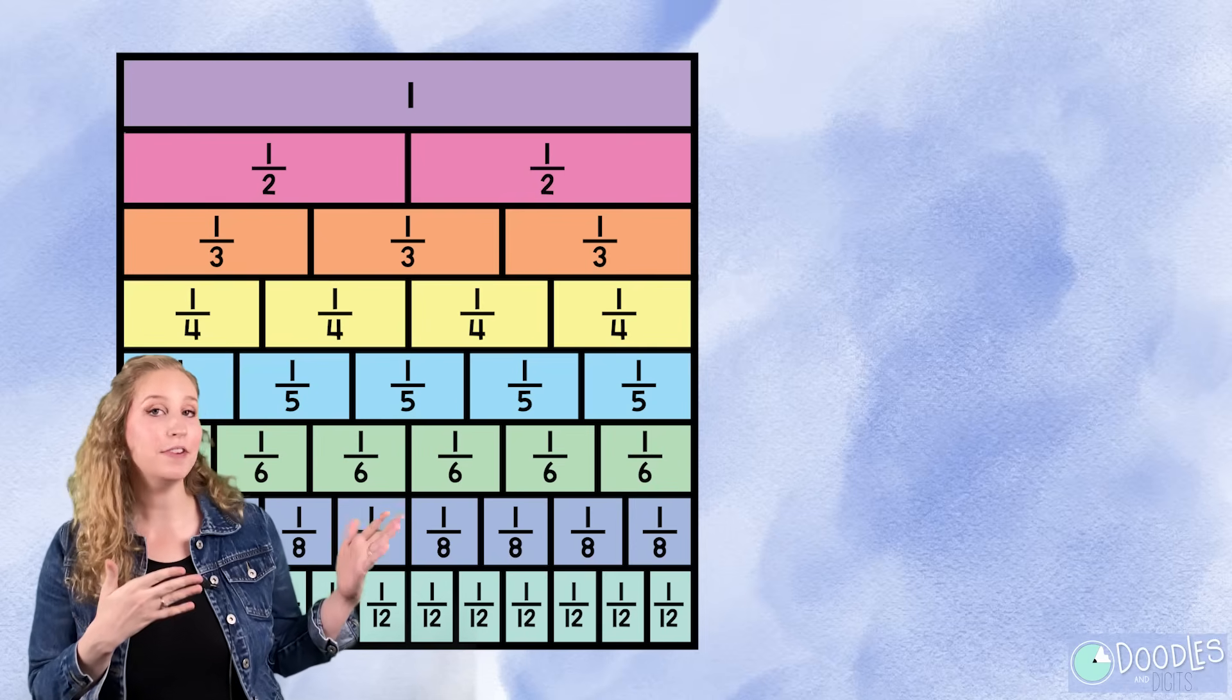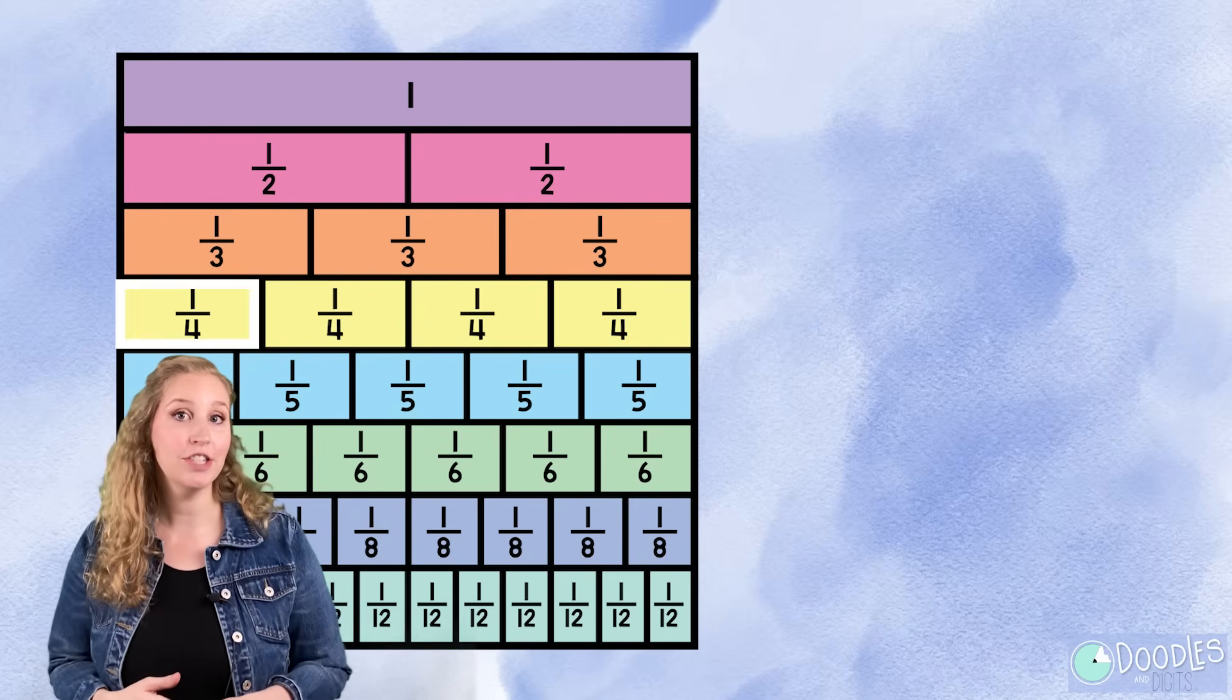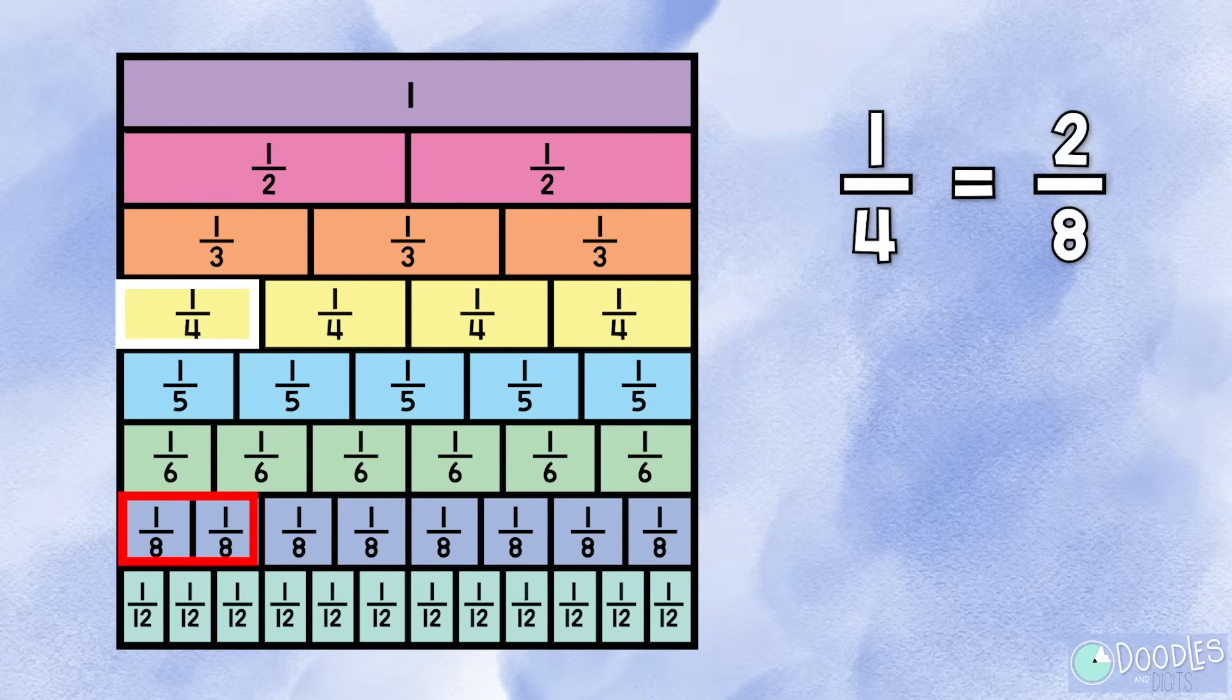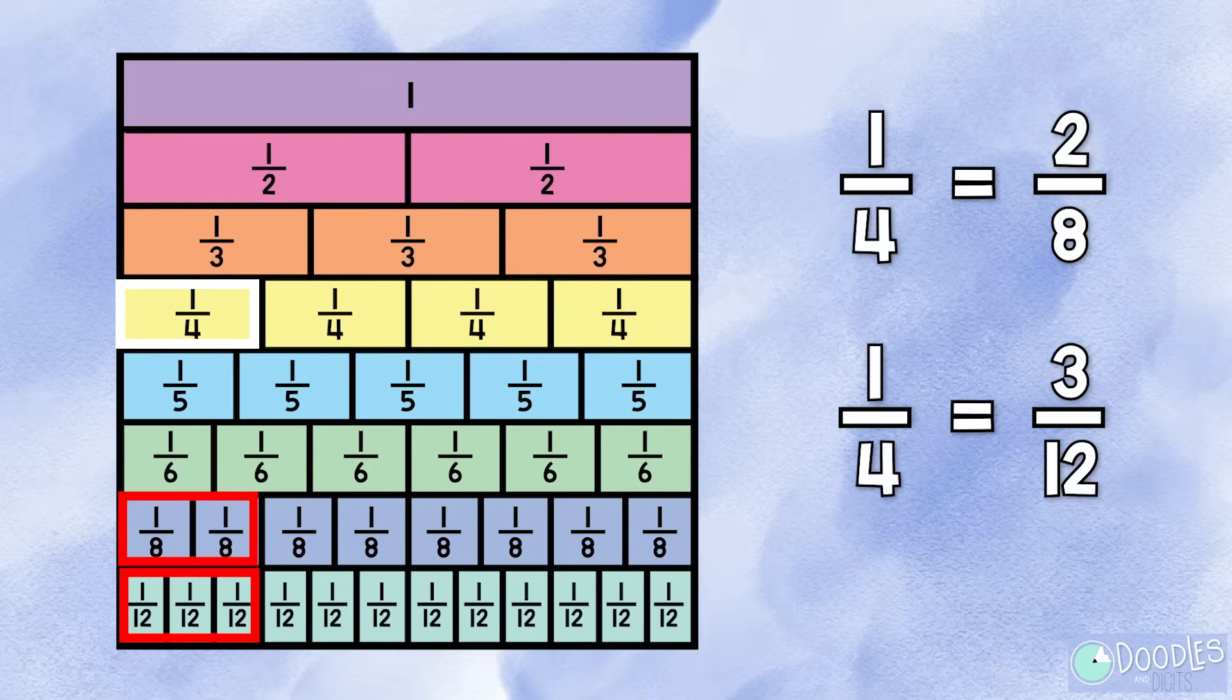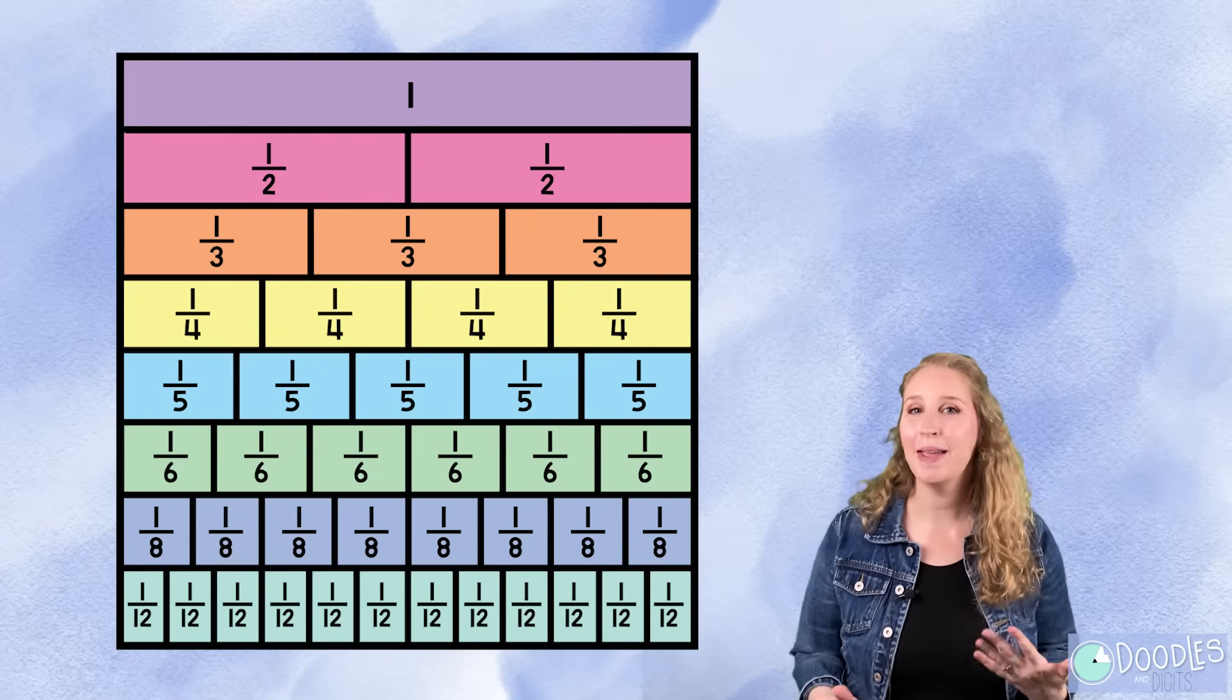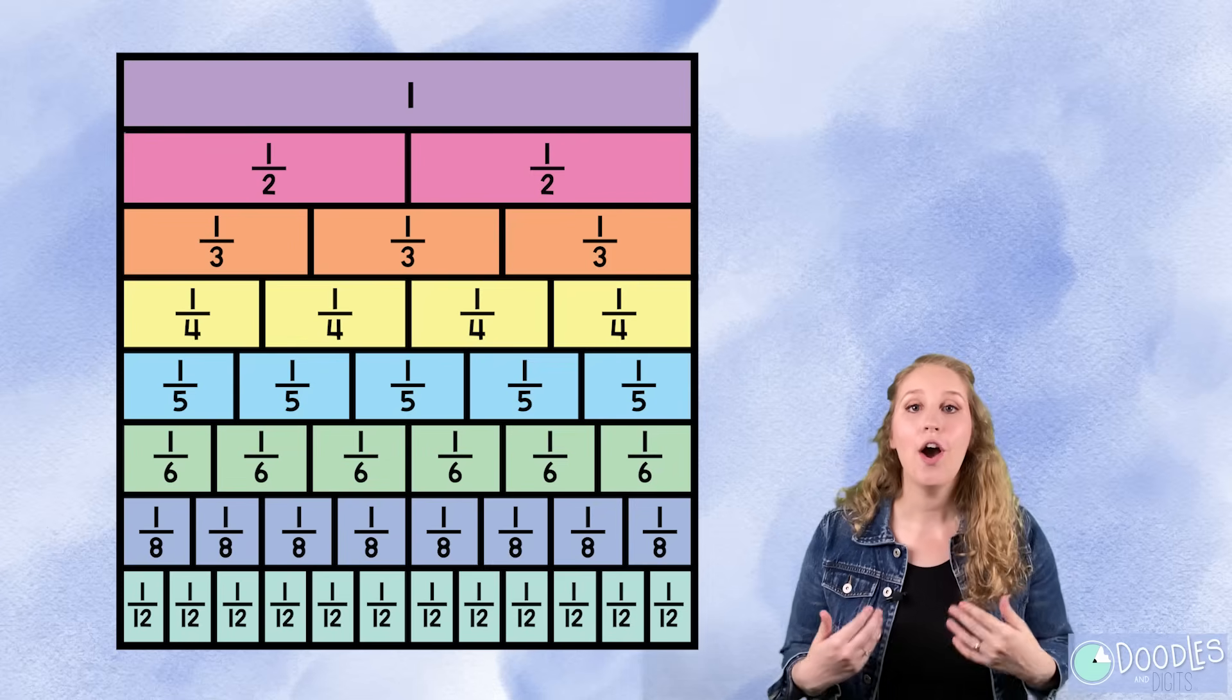Now that we have found equivalent fractions to one half, can you find a couple equivalent fractions to one fourth? One fourth is equivalent to two eighths. One fourth is also equivalent to three twelfths. A fraction chart is a great way to make math visual so you can actually see what two fractions are the same.